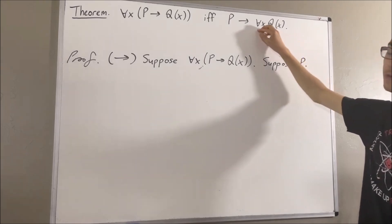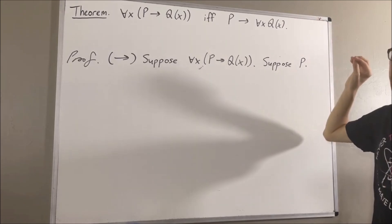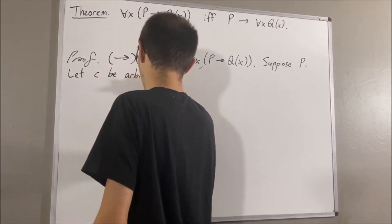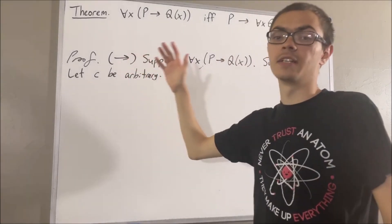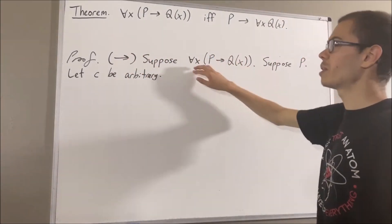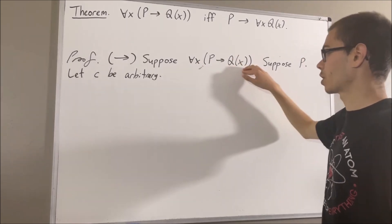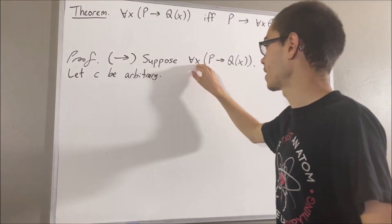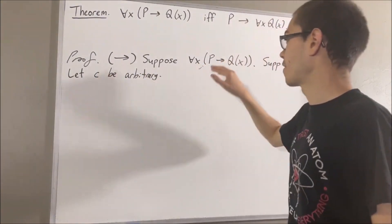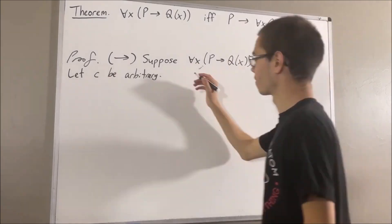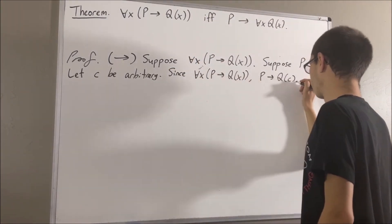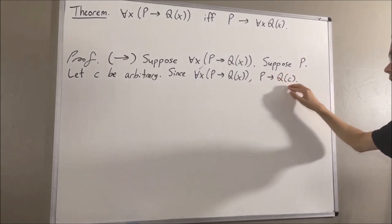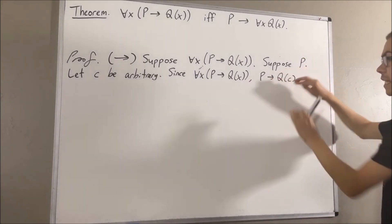Since we're trying to prove a statement about all objects, give me an arbitrary object — I'll call it c. We want to show that Q of c is true. Now we know that for all x, P implies Q of x, and this works for all objects, so it must work for our object c. Taking x to be c, we have that P implies Q of c. But since P is true and P implies Q of c, these two tell us that Q of c must be true.